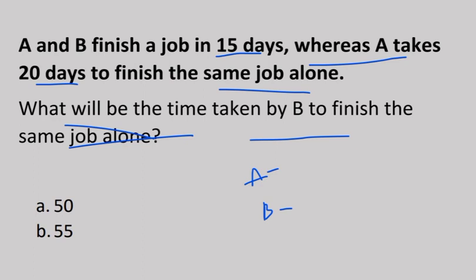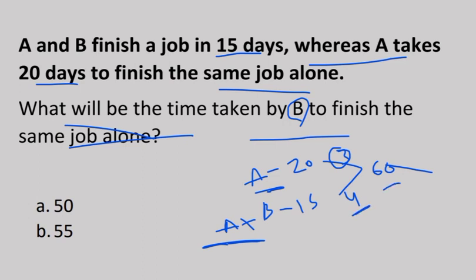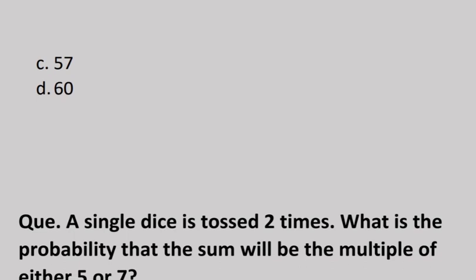In these types of questions, write A + B equals 15 days and A alone equals 20 days. Take the LCM, which is 60. When you cancel, you get 4 for A+B and 3 for A. So A and B both have done 4 units of work, A has done 3 units, that means B has done 1 unit. How much time does B take? 60 divided by 1 equals 60 days. B will take 60 days. I guess every one of our students must have done this question.